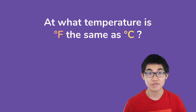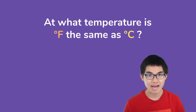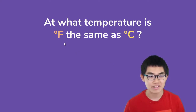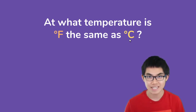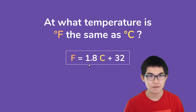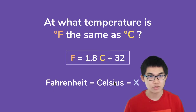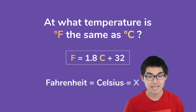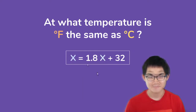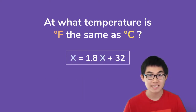What this means is 98.6 degrees Fahrenheit is the same thing as 37 degrees Celsius, and this is basically our answer. Now, at what temperature is the degree in Fahrenheit the same as the degree in Celsius? What this means is the number in Fahrenheit is the same number as the number in Celsius. We can use the formula, and this time we're trying to find the number where Fahrenheit is equal to Celsius. To do that, we can set both variables to x.